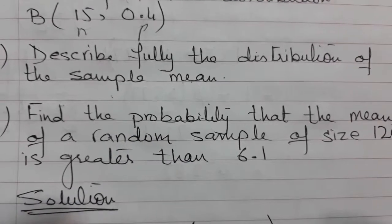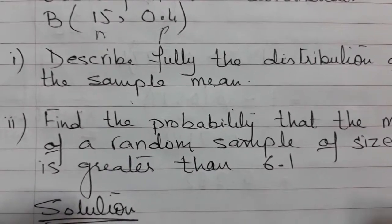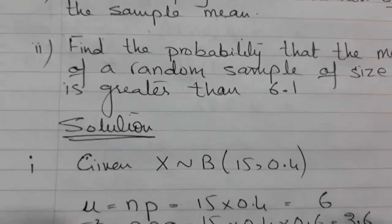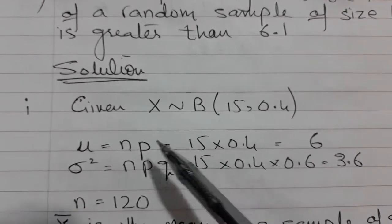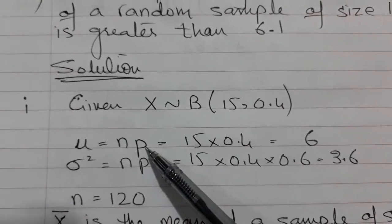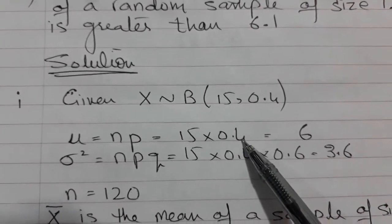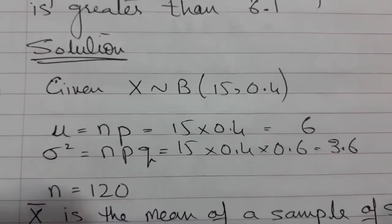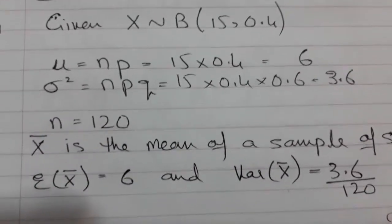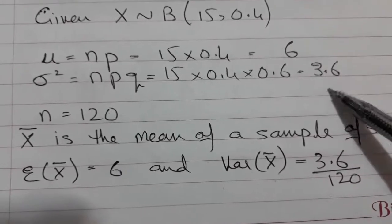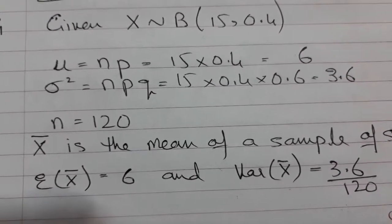For a Binomial distribution, the mean is mu = NP and the variance is NPQ, where P + Q = 1. With the given N and P, multiply to get the mean of 6. With P = 0.4, Q = 0.6, so variance = NPQ = 3.6. The sample mean distribution will have mean 6 and variance 3.6/120, since the sample distribution variance is the population variance divided by n.